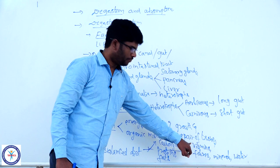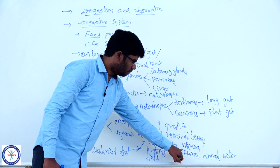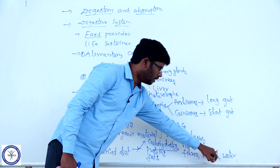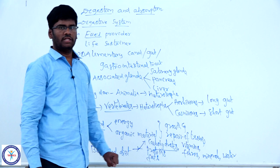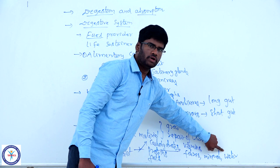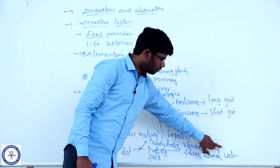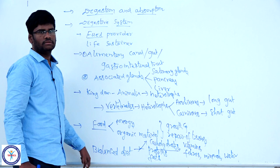Fibers are roughages and they avoid constipation. There are more than 20 minerals required by the body. Water is an inorganic compound but plays a very important role in metabolic activities and prevents dehydration. Dehydration kills a person much faster than lack of food. Without water there is no metabolic activity. If all these components are present in sufficient amounts, that is called a balanced diet.